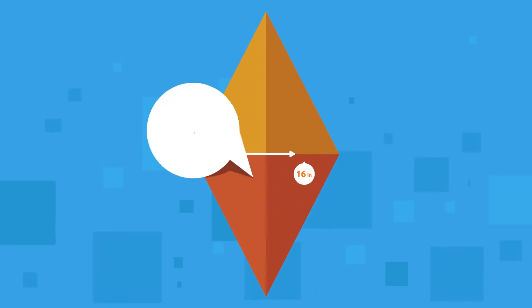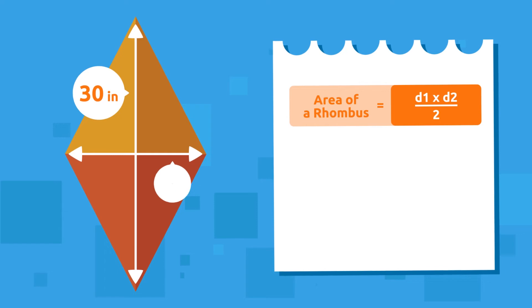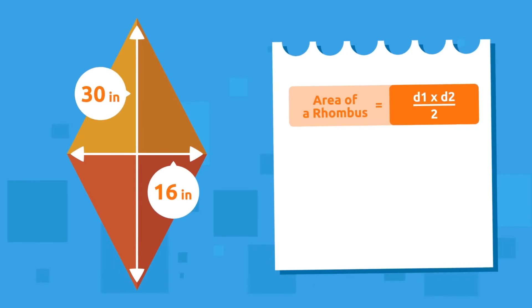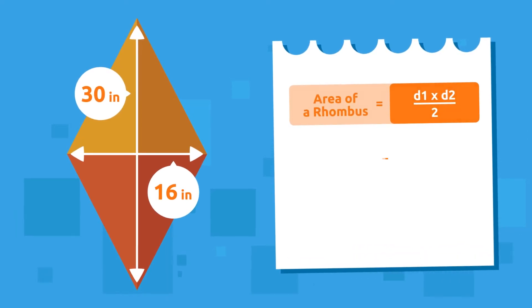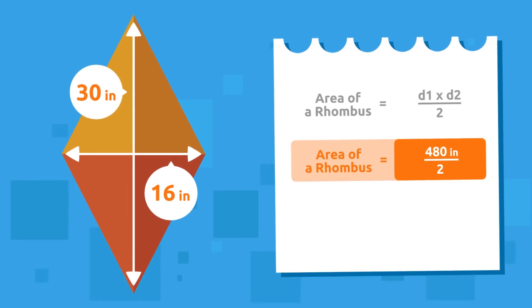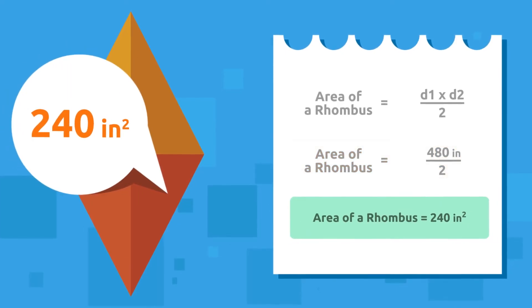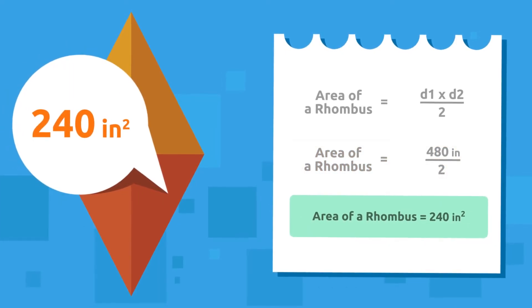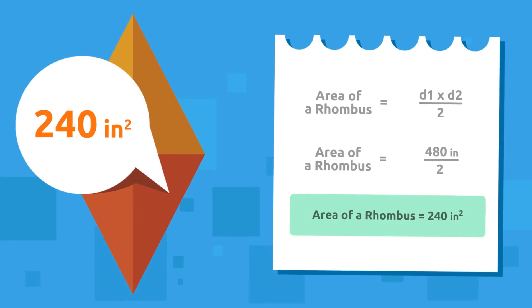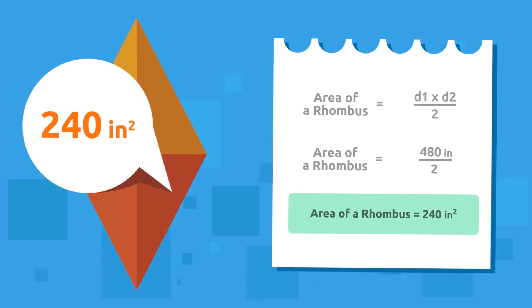Remember that we must multiply the longest diagonal by the shortest diagonal and then divide by 2. Let's see: 30 times 16 equals 480, and 480 divided by 2 equals 240. That's great! We have helped Anna to find out her kite's area. Did you see that? That's awesome!